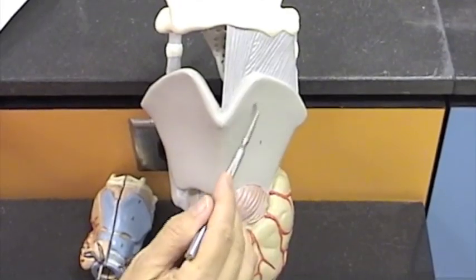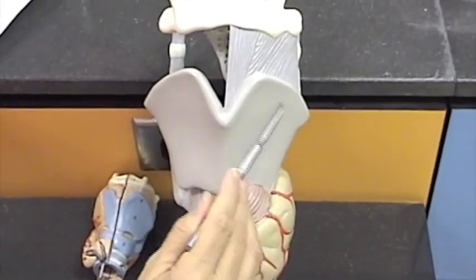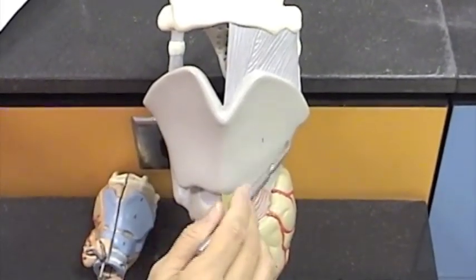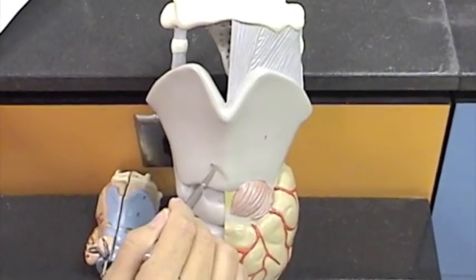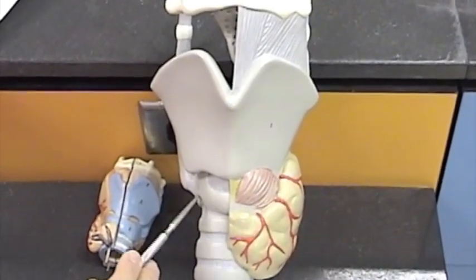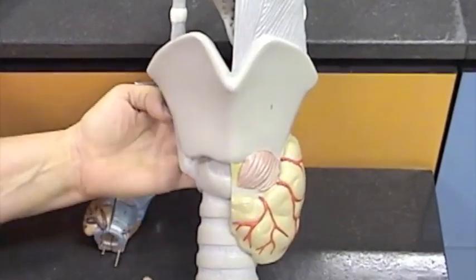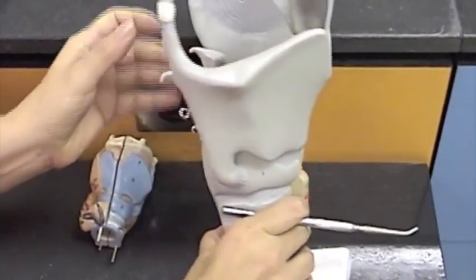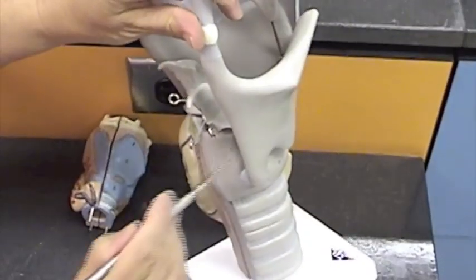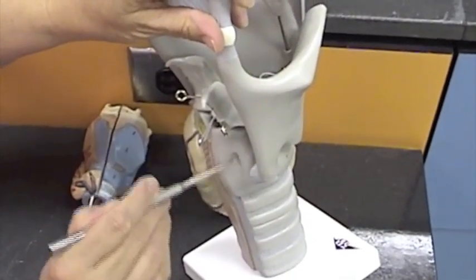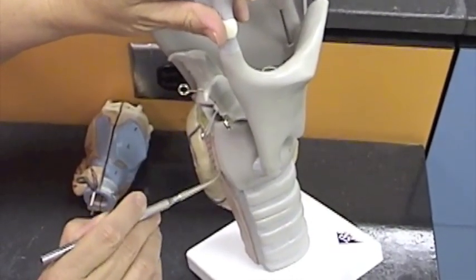Now we're into part of the larynx. Here is the thyroid cartilage. This great big shield-like thing is the thyroid cartilage. Down here we see a representation of the cricoid cartilage. And if I turn this around, you get a sense of the cricoid cartilage, how it increases and is larger in size toward the posterior of it.